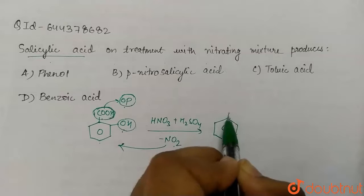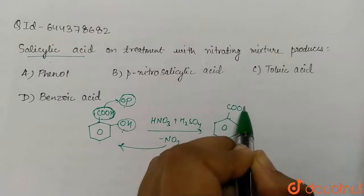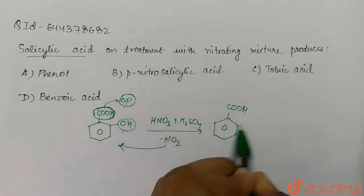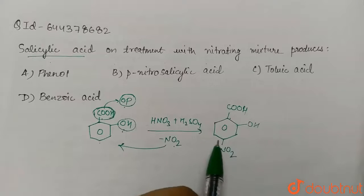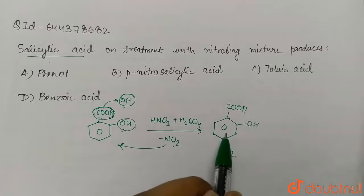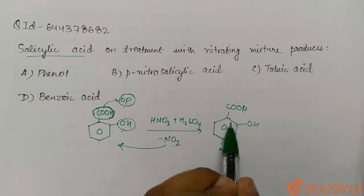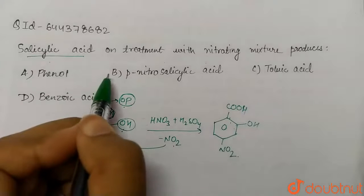Here we will get the product like this: here we have COOH which is from reactant, and here OH, and on para position we will get NO2. This is our final product, which is p-nitro salicylic acid. So our answer will be B.